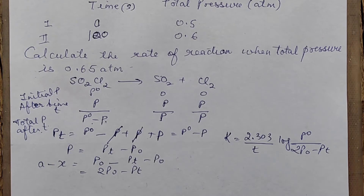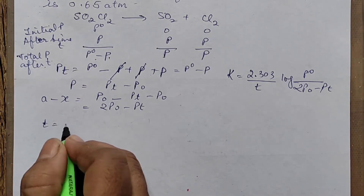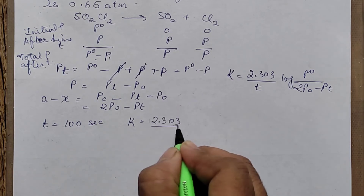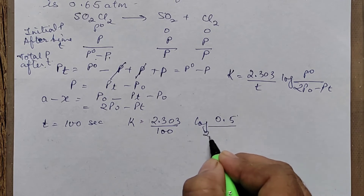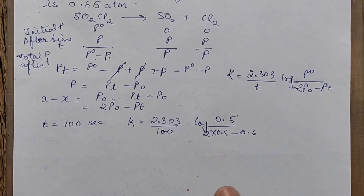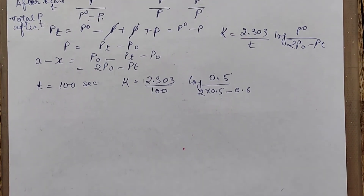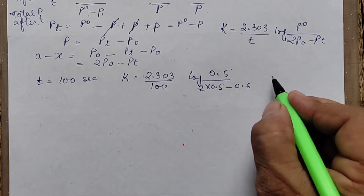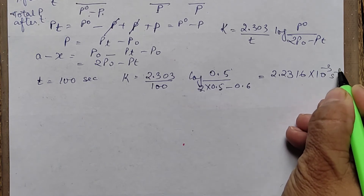Using time = 100 s, P₀ = 0.5 atm, and Pt = 0.6 atm: K = (2.303/100) × log(0.5/(2×0.5 - 0.6)) = (2.303/100) × log(0.5/0.4). Solving gives K = 2.2316 × 10⁻³ per second.